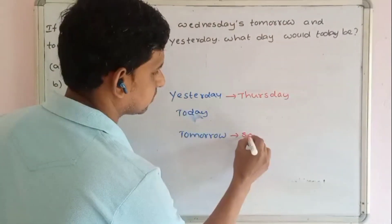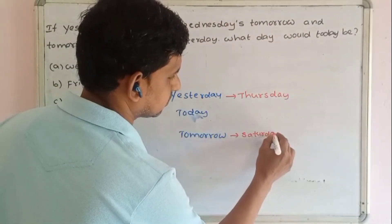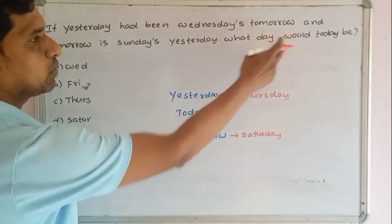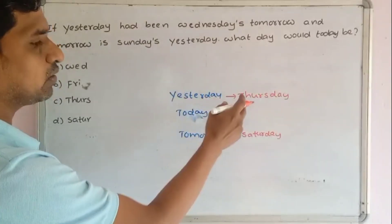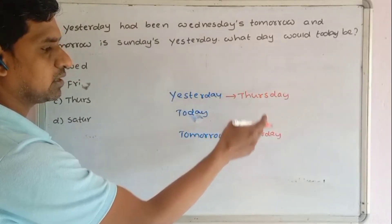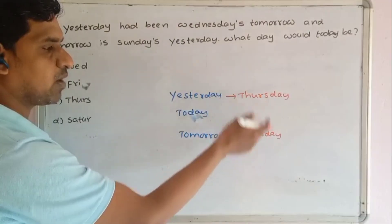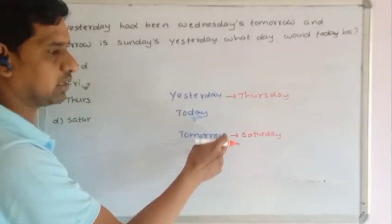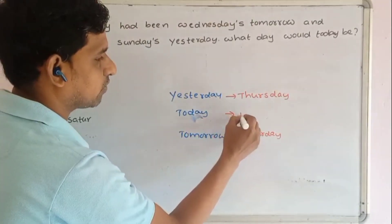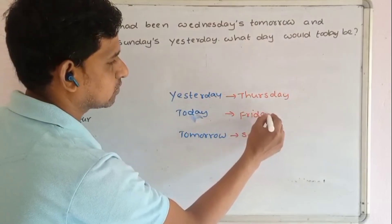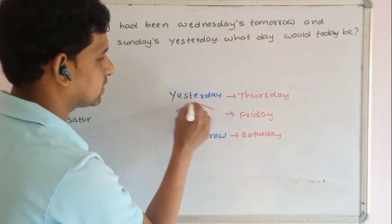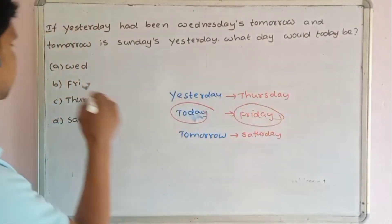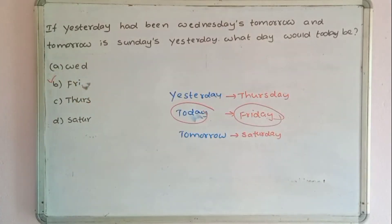So what day would today be? The answer is Friday. The answer is option B.